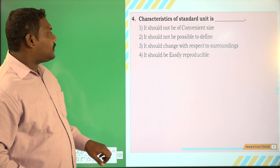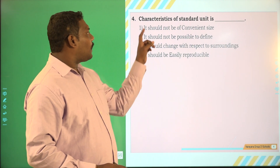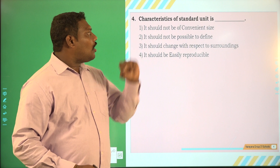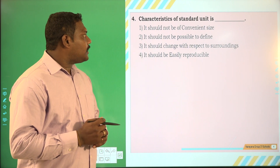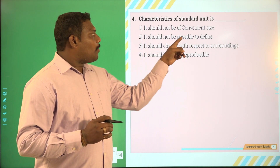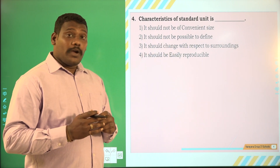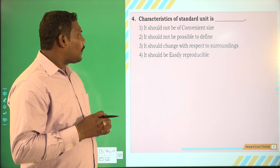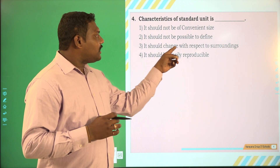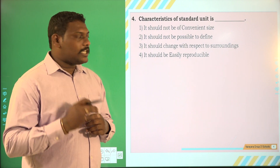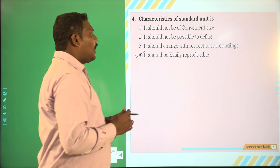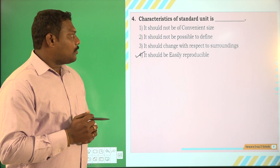Next question — the other characteristic: it should not be of convenient size — No, it should be. It should not be possible to define — No, it should be possible to be defined. It should change with respect to surroundings — No, it should not change with respect to surroundings. And it should be easily reproducible — Yes.